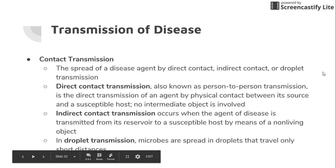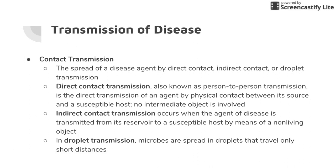If someone has a gnarly disease that can be spread by droplet transmission, then every time they sneeze, cough, laugh, or talk, they're giving a death sentence to everybody else in the room with the amount of droplets being produced. Disease agents that travel short distances are not considered airborne. Examples of diseases transmitted by droplet are the flu, pneumonia, and pertussis, which is commonly known as whooping cough.